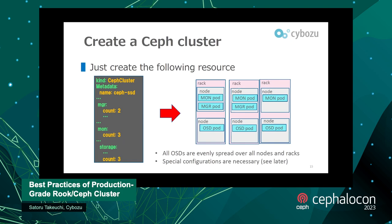To create a Ceph cluster, you just create a CephCluster resource in YAML format. The name is ceph-ssd, with count-manager set to two, count-mon set to three, and count-osd set to three. If there are three racks and two nodes per rack, the monitor, manager, and OSDs are deployed automatically by Kubernetes. Importantly, all OSDs are evenly split over all nodes and racks automatically — no special configuration is necessary.